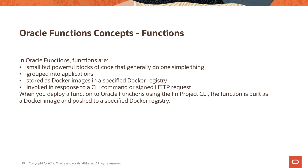Once an application is created, you can then get into creating functions. Functions are blocks of code that you write — you can use any language, but there is first-class support for five languages: Java, Python, Go, Ruby, and Node.js. These blocks of code generally do one simple thing very well, and are typically designed to be microservices-oriented rather than part of a monolith.